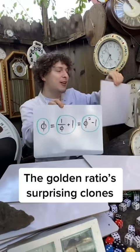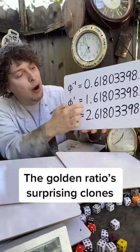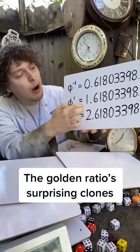where the golden ratio to the first power has one with that tail, to the negative first power removes the one, and to the second power replaces the one with a two.